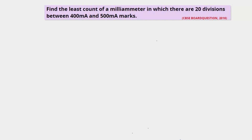Hello students, welcome back to Sigma Physics Online. The next question is a numerical from the electricity chapter: find the least count of a milli ammeter in which there are 20 divisions between 400 milli ampere and 500 milli ampere. So here we have been given a milli ammeter in which there are 20 divisions between 400 milli ampere and 500 milli ampere.